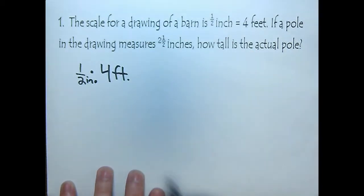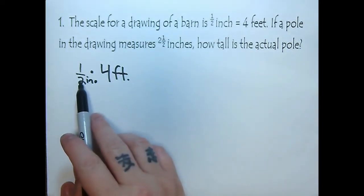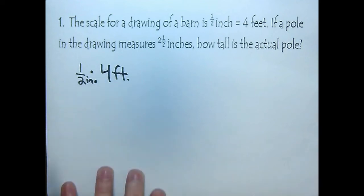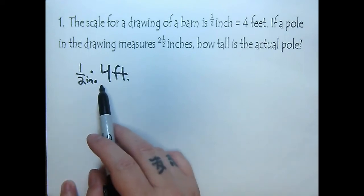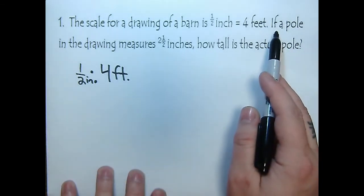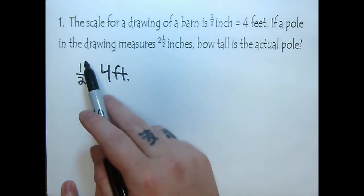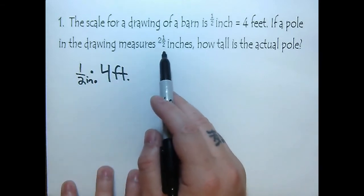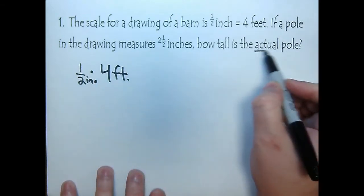Okay, so we've just established one quantity to another quantity, and that's our initial ratio. Now what we want to do is set this up as a unit rate so we can solve for any kind of problem that comes up. In this particular case, it says if a pole in a drawing measures two and one half inches, how tall is the actual pole?